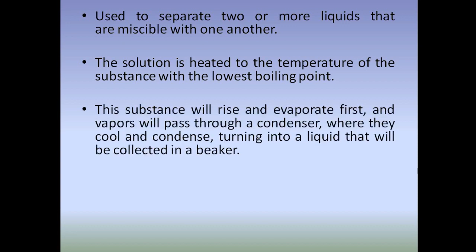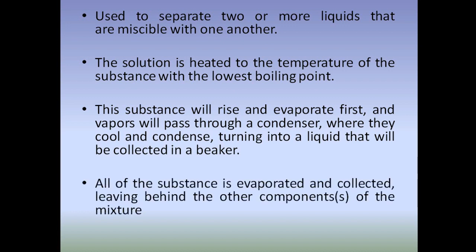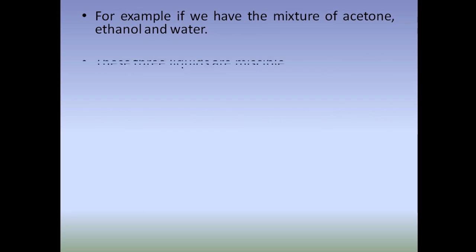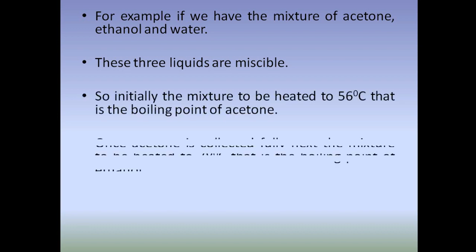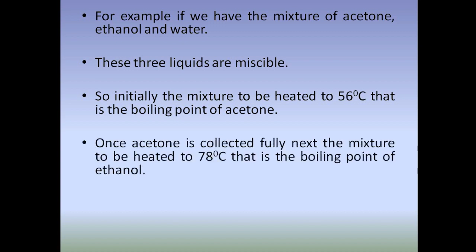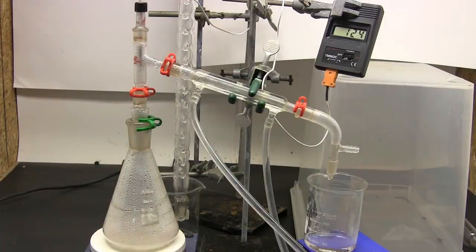The liquid with the lowest boiling point will evaporate first, and the vapors pass through a condenser where they cool and condense into a liquid collected in a beaker. All of that substance evaporates, leaving behind the other components. For example, with a mixture of acetone, ethanol, and water, the mixture is first heated to 56°C (boiling point of acetone) to collect acetone, then to 70°C (boiling point of ethanol) to collect ethanol, and pure water is left behind in the round-bottomed flask. This is called the fractional distillation method.